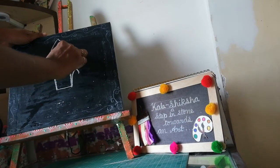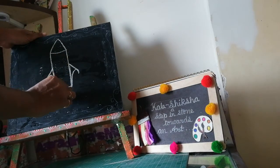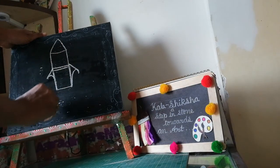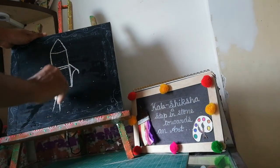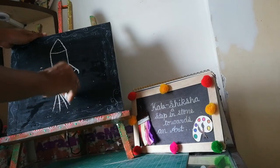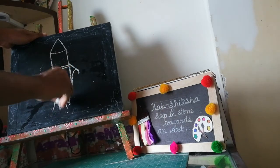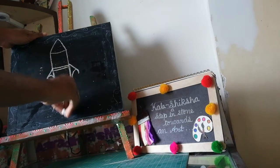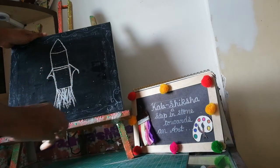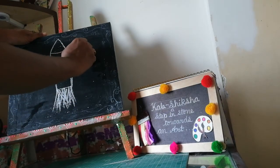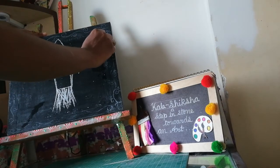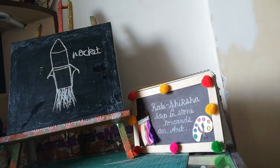Just join this line. Then, stroke. So, this is a rocket. R for rocket.